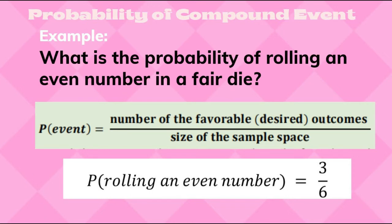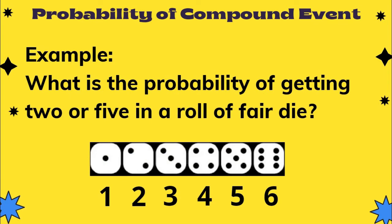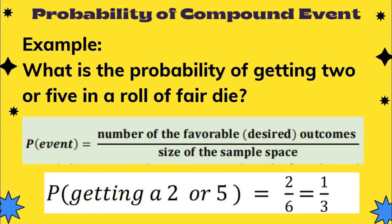Reducing 3 over 6 to lowest terms gives 1 half, which is the same as 0.5 or 50%. Next example: what is the probability of getting a 2 or 5 in a roll of a fair die? The event is getting 2 or 5 — there are 2 favorable outcomes. The size of the sample space is 6. Therefore, the probability of getting a 2 or 5 is equal to 2 over 6, which reduces to 1 third in lowest terms.